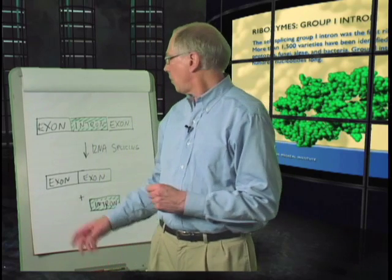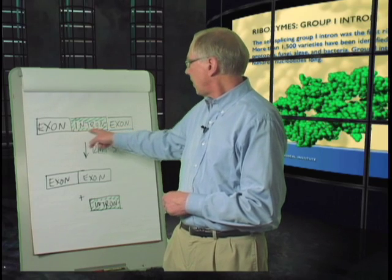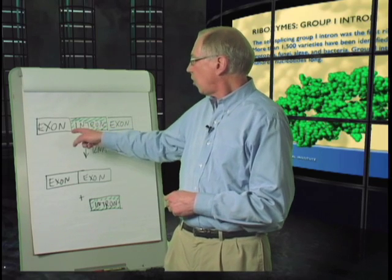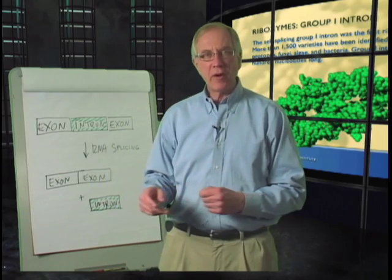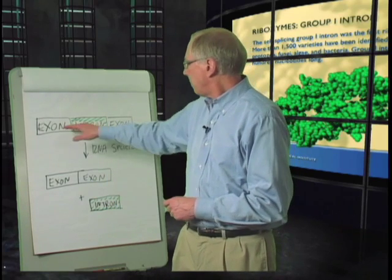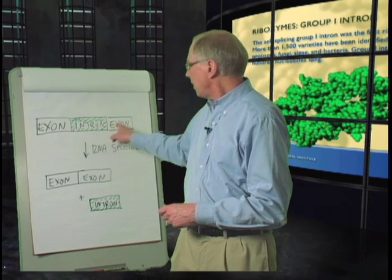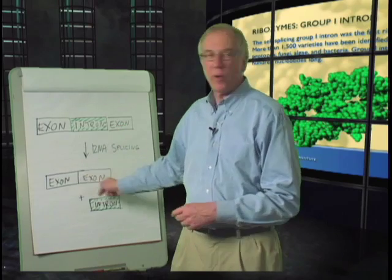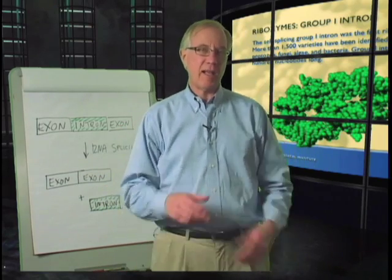The gene that we were looking at made an RNA that was interrupted by a stretch of non-coding sequence called an intron. At this time, RNA splicing had been discovered a few years earlier, but people knew very little about the mechanism by which an intron-containing RNA would be spliced to rejoin these two flanking sequences called exons and release that intron RNA.